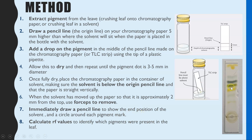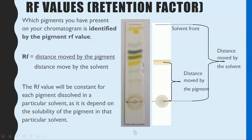Then we calculate the Rf values, and if you are comparing two different leaves you would repeat that entire method for your second leaf. Rf values, which stands for retention factor, is the way that we identify which pigments are present. You could take a guess based on color — the yellows might be xanthophyll, the gray ones pheophytin, a bluey-green might be chlorophyll a — however you need to standardize this by using an Rf value.